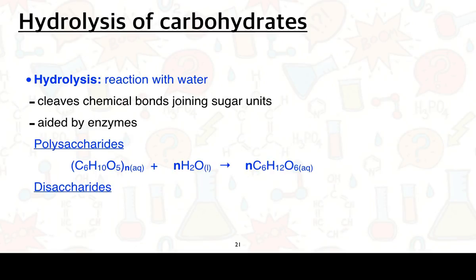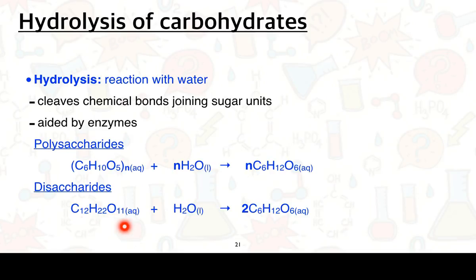With disaccharides — two sugar units joined together — for example sucrose, a combination of glucose and fructose, with formula C12H22O11. This formula is lacking two hydrogens and one oxygen compared to two lots of glucose, which would give 12 carbons, 24 hydrogens, and 12 oxygens. So we add one water molecule through hydrolysis to yield two moles of glucose.